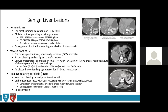A popular question involves benign liver lesions and their radiographic findings. The most common is a hemangioma. Hemangiomas are often asymptomatic and have a characteristic CT finding: peripheral enhancement on the arterial phase, followed by centripetal filling of contrast on the portal venous phase, and retention of contrast on the delayed phase. Most are benign and left alone, though large hemangiomas can cause Kasabach-Merritt syndrome (thrombocytopenia and consumptive coagulopathy) or high-output cardiac failure in the pediatric population.